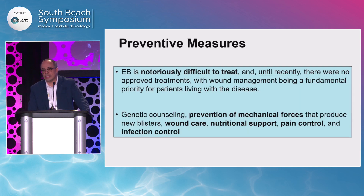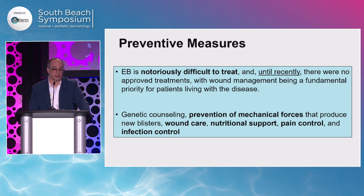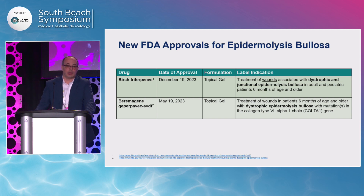Until recently, the treatment paradigm hinged on preventive measures: genetic counseling, conventional standard therapy — which is dressing, infection control, pain control, and nutritional support. However, the good news is that 2023 was phenomenal in the wound space, with two newly approved drugs for EB by the FDA.